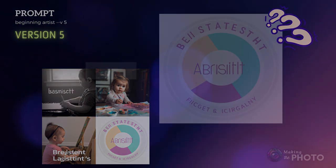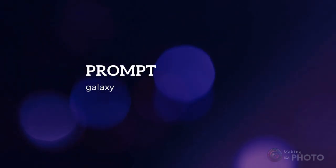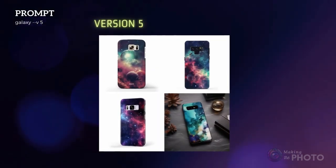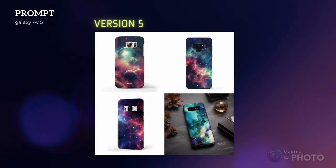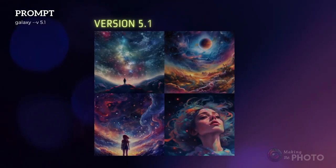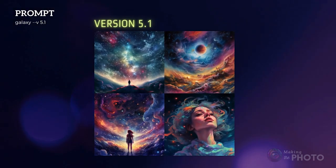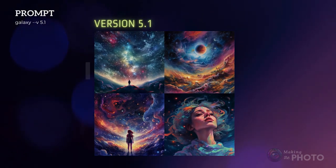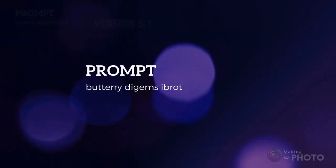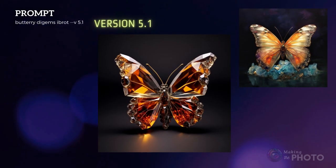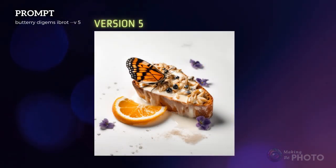Here's another example. If you prompt 'Galaxy,' version 5 gets confused — it can't tell if you're asking for a solar system or a phone, so it just throws both at you. But version 5.1 isn't phased one bit; it assumes you're after something artistically beautiful. Toss a random prompt into the mix and version 5.1 will hand you something stunning. Version 5, on the other hand, gives you, well, buggy bread.